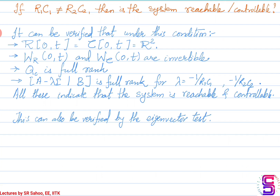In this lecture, we took up an example of an LTI system and evaluated its reachability and controllability under two different conditions using various methods. You should pick up a few more examples from the reference texts and try checking reachability and controllability through various approaches. No matter which method you apply, whether the system is controllable or reachable does not change — the outcome is always consistent. Thank you.